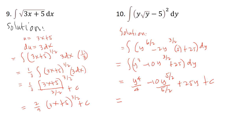The final result is y to the fourth over 4 minus 4y to the fifth over 2 plus 25y plus C.